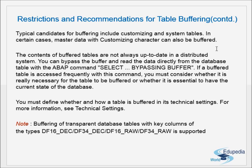The contents of buffered tables are not always up to date in a distributed system. When data changes, only the local buffer on the application server where the program executed is up to date. All other application servers hold old data until synchronization happens, meaning programs running on other servers may still show old data.